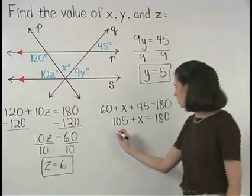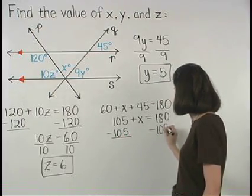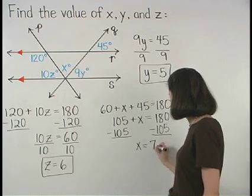And subtracting 105 from both sides, we find that x equals 75.